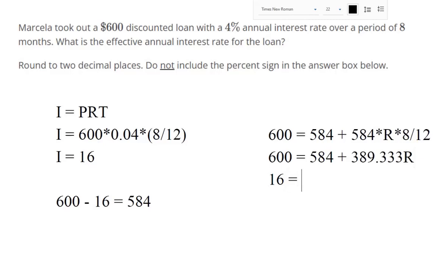So, we can subtract that $584 from both sides, and then divide $389.333 from both sides.